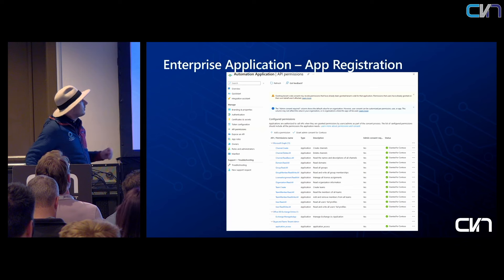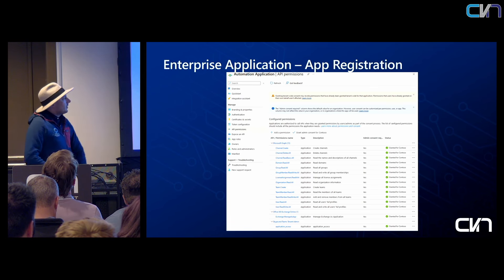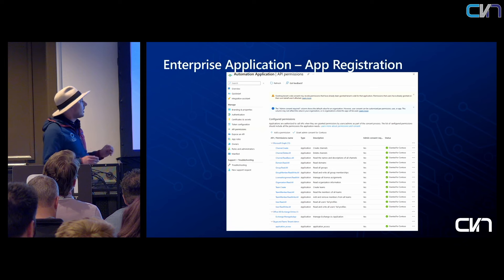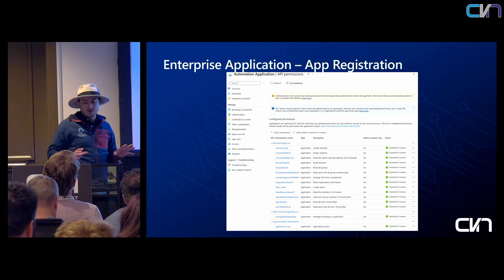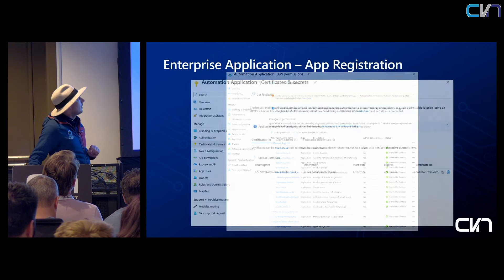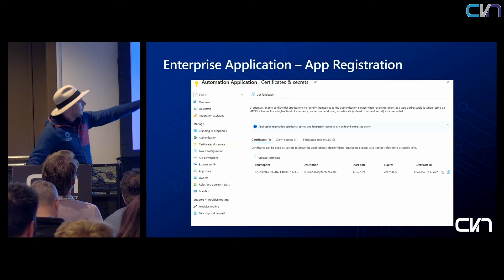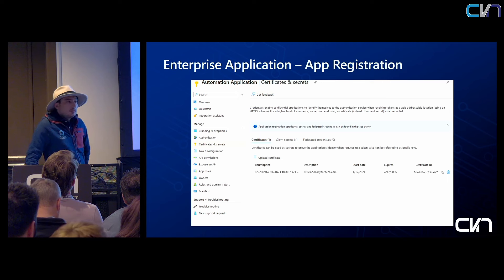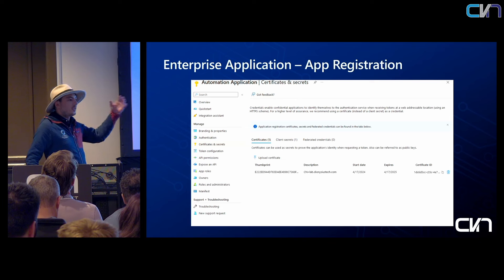You can see all the listed permissions I've assigned under API permissions. In this case, I'm allowing myself to do a lot in Teams, I've given myself Exchange Online permissions, and Skype and Teams tenant permissions. Under certificates and secrets, I've uploaded a certificate. I have a specific thumbprint, and I know that I have that on the client I'm going to use to access this API.